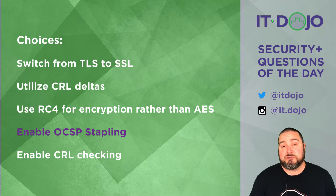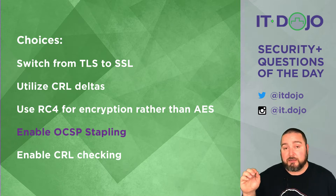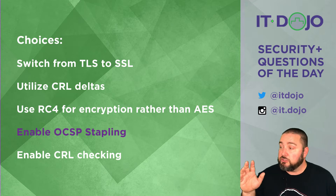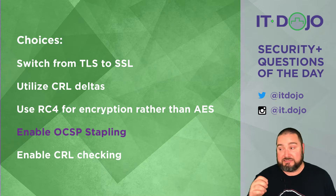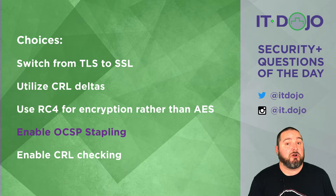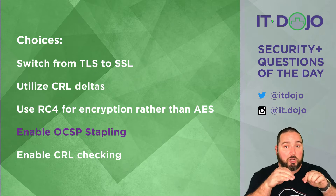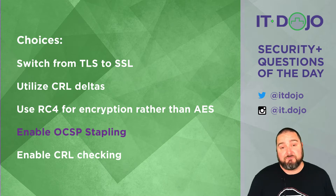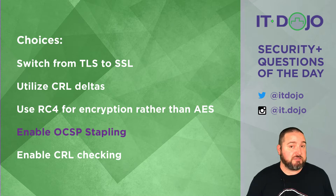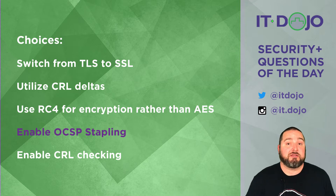What OCSP stapling does is have the web server itself periodically — usually every 15 to 20 minutes or so — go to the OCSP server and get a timestamped and signed status message regarding the validity of its own certificate, and then staple it to the certificate. When it's delivered to your web browser during the connection setup phase, this can restore your privacy so you're not sending a query to an OCSP server telling it which web servers you're visiting. It can also speed up the connection by reducing the overhead associated with it. That's very much the answer we're looking for.